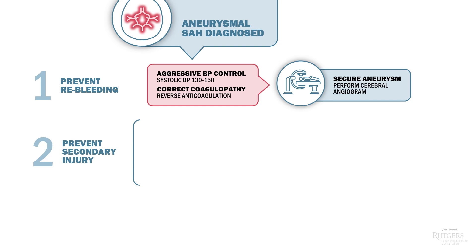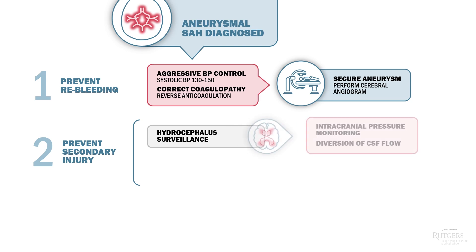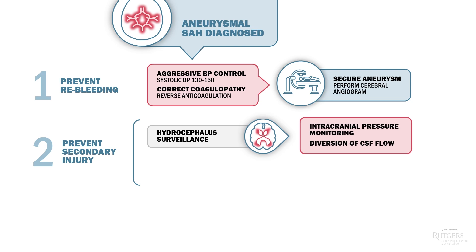The next step is to prevent secondary injury. A significant mechanism for secondary injury in patients with subarachnoid hemorrhage is hydrocephalus. Blood in the subarachnoid space clots and prevents efficient CSF circulation. Hydrocephalus may require intracranial pressure monitoring and diversion of cerebrospinal fluid flow. Patients with subarachnoid hemorrhage are quite unstable, so they are usually managed in the intensive care unit setting. Things can change very quickly.